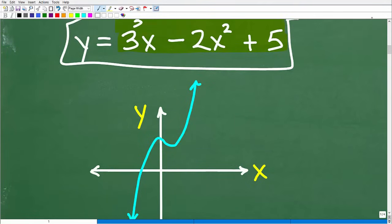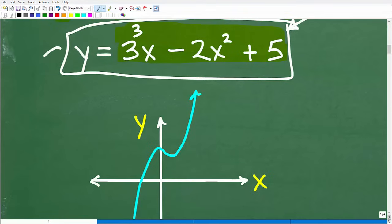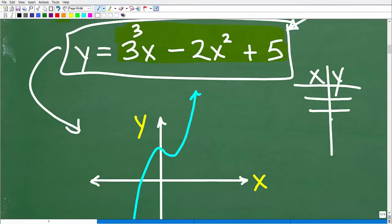The graph of this function will look something like this. How do I go from this thing to this graph? You could construct a real basic x, y table of values. To understand this video, you do need to have some basic algebra knowledge.